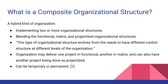A composite organization structure is a hybrid kind of organization. This type evolves based on the needs to have different control structures at different levels of the organization. It blends the functional, matrix, and projectized organization structures. An organization becomes composite when implementing two or more organization structures.